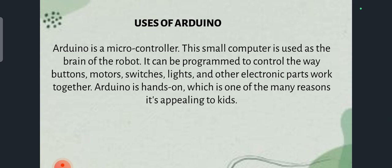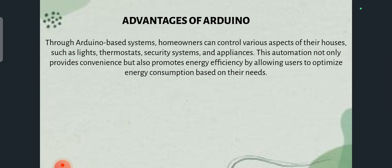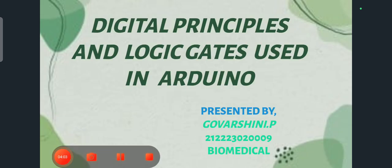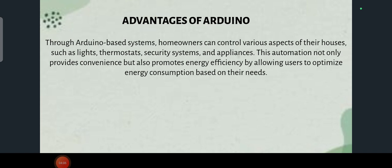Arduino is hands-on, which is one of the many reasons it is appealing to kids. The advantages of Arduino include: Arduino-based systems are used by homeowners to control lights, thermostats, security systems, and appliances. It is used for sensors in lights and to check heartbeats. It has enormous applications in biomedical fields such as measuring heartbeats and other medical processes. Arduino has various pins which can be connected to various electronic components, and it is cheaper compared to other electronic devices.